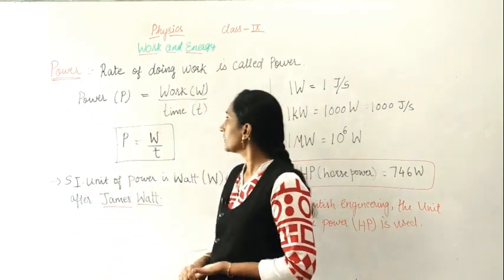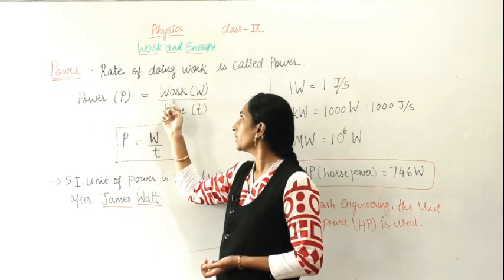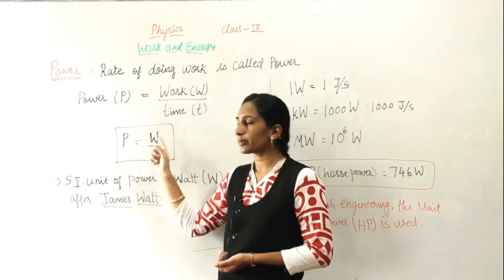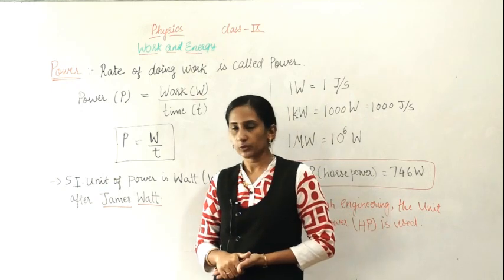So here you can see the power. It is denoted by the letter capital P. Work is W and time is denoted by T. In formula form it is written as P = W/T. This formula is used for problem solving.